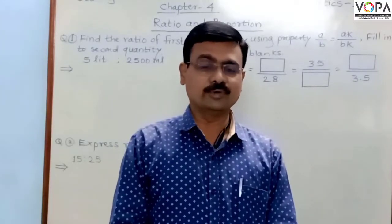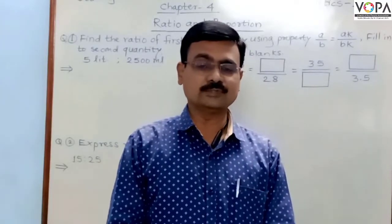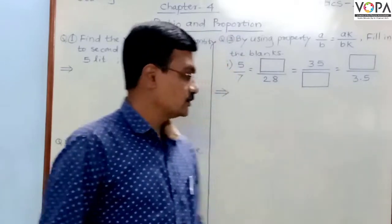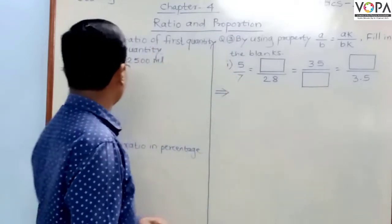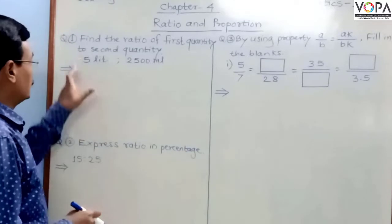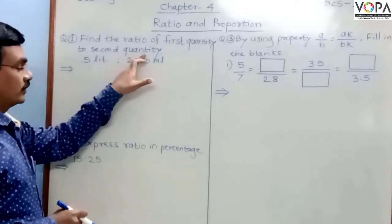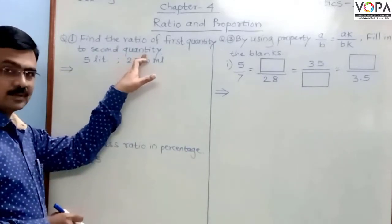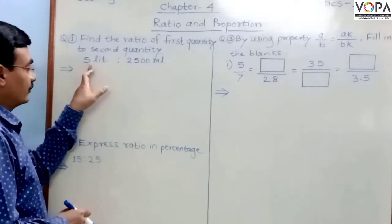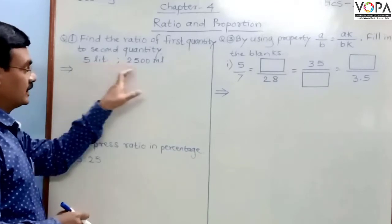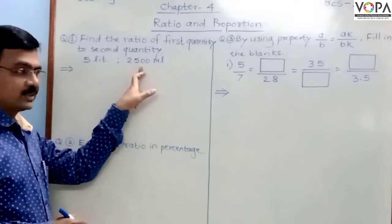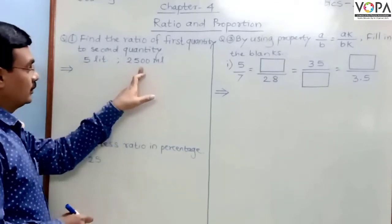Let us solve two examples which are based on ratio and proportion. The first question is: find the ratio of the first quantity to the second quantity. The two quantities given here are 5L and 2500mL.